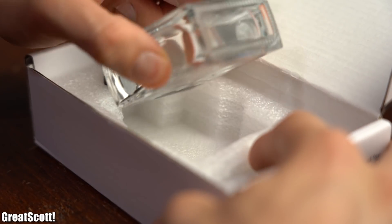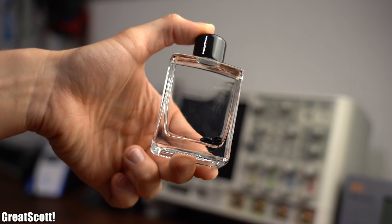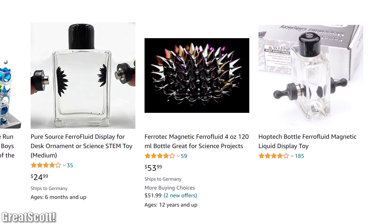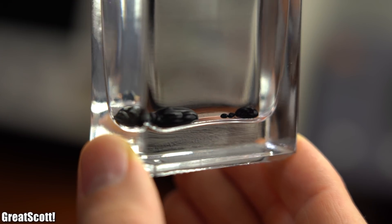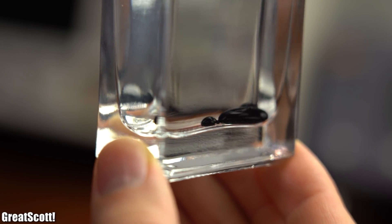Recently I got myself a bit of ferrofluid that is suspended in a clear liquid inside a flask. You can get this practically everywhere on the internet. Now the special thing about this black ferrofluid goo is that it gets attracted by magnets.